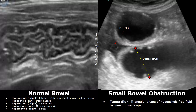This is another case showing the tanga sign. The triangular shape of the hypoechoic free fluid seen between bowel loops is called the tanga sign. It has a triangular shape and is often associated with small bowel ischemia or infarction.